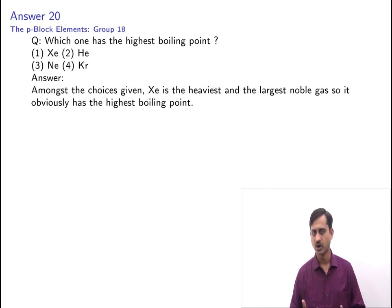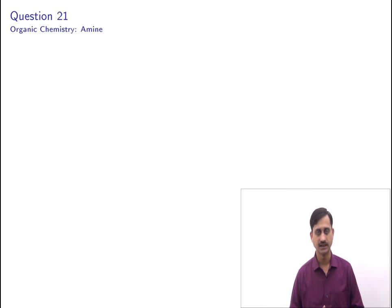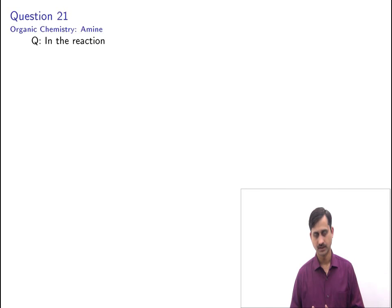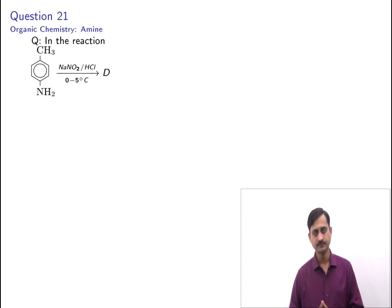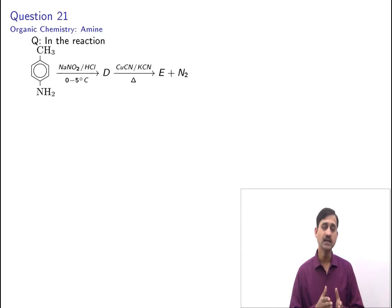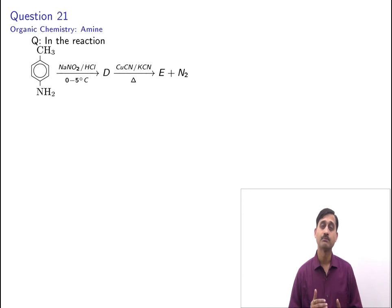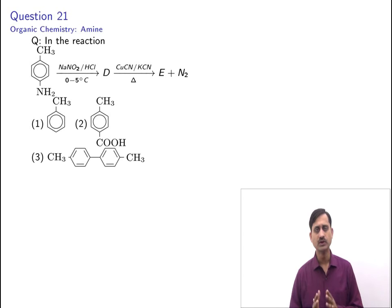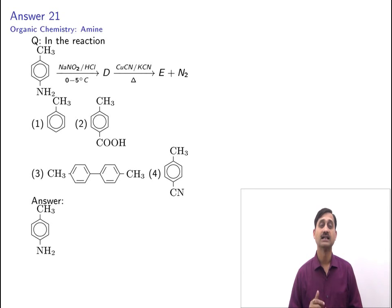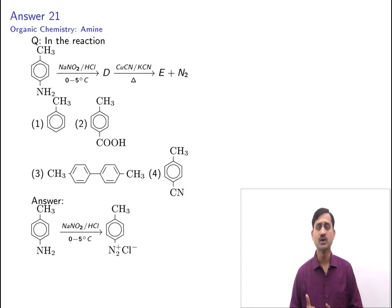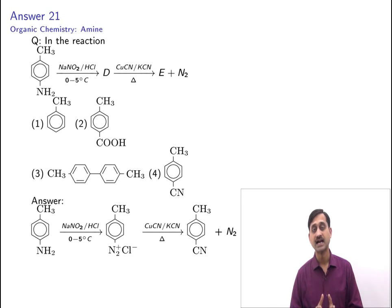The next question is from organic chemistry, amines — nitrogen-containing compounds. In the given reaction: para-toluidine reacts with NaNO₂/HCl at 0–5°C to give product D (a diazonium salt), which reacts with cuprous cyanide in the presence of KCN and heat, releasing nitrogen to give product E. The reaction of a primary aromatic amine with sodium nitrite in acidic medium forms a diazonium salt, which undergoes Sandmeyer's reaction with CuCN/KCN to give a cyano product (a nitrile).